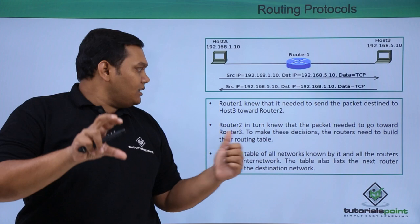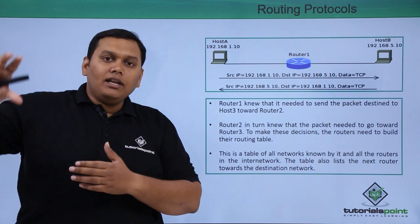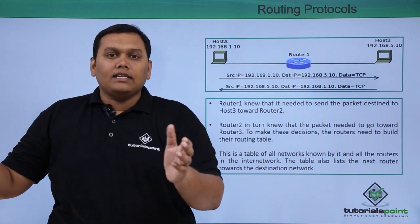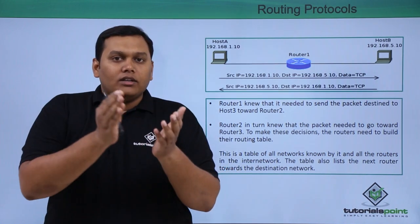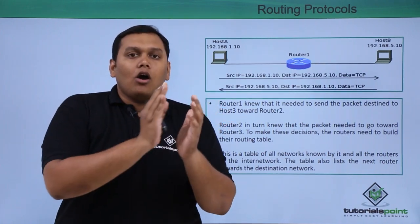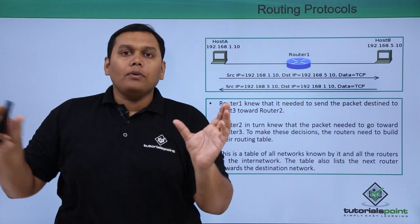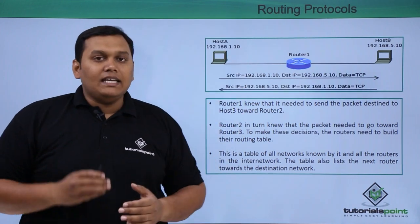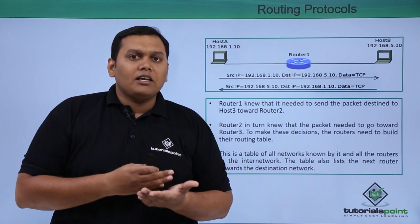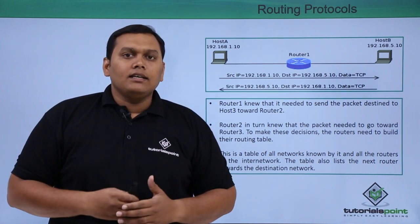Router 2 in turn will be sending the packet to router 3 to make these decisions. Hence, the routing table is used here. This is a table where you will have all the network details, all the routers, and source or destination IP addresses, so that this routing table is forwarded from one hop to another. A hop is the journey from one router to another router when information is passing — that is called a hop count. You can also see routing protocols in detail like EIGRP, OSPF, RIP, and RIPv2 — which are classless and classful protocols — in the next videos.